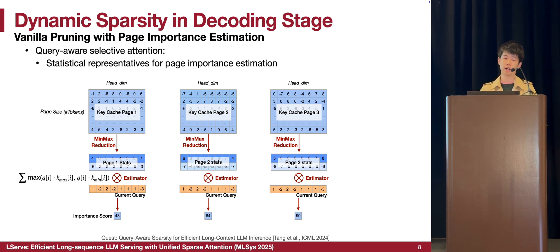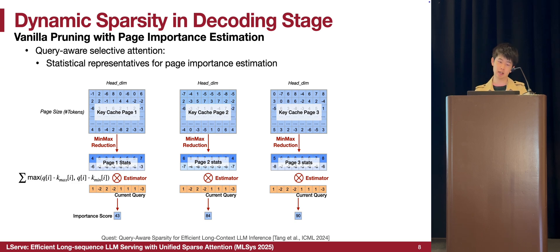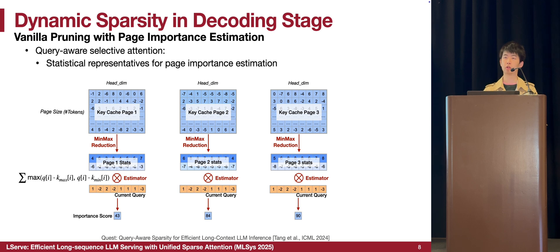Now let's look at the decoding stage implementation of our dynamic sparsity. I'd like to introduce a vanilla pruning algorithm with page importance estimation, taking the Quest paper as an example of query-aware selective attention. In this kind of method, people typically use a representative for each KV page — computing statistics such as min-max reduction to represent the features of the current KV page — and then use the current query token to compute an importance score to estimate whether the KV page is useful to attend to. Finally, the pruning algorithm picks the KV pages with the highest importance scores for selective sparse attention.